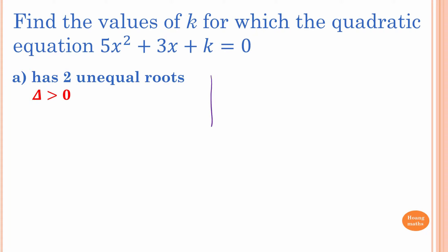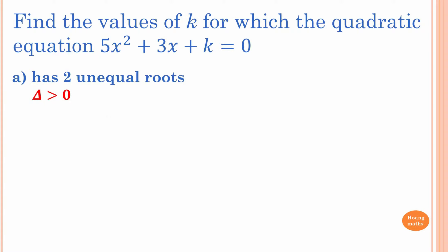When you draw a graph, it looks like this. If you have two unequal roots — two solutions — the discriminant is equal to b² minus 4ac.